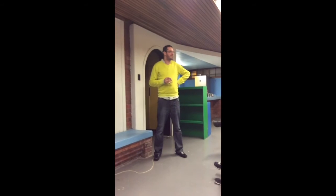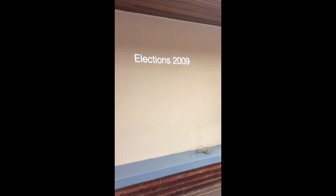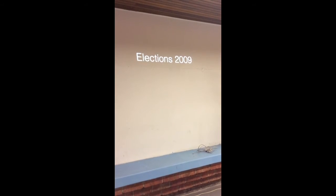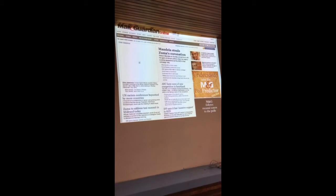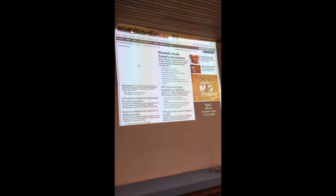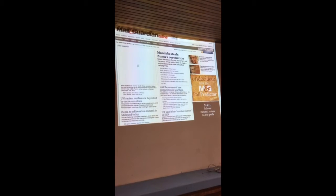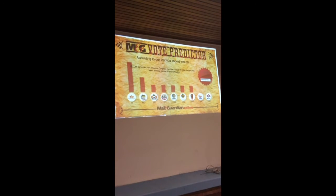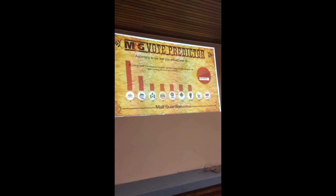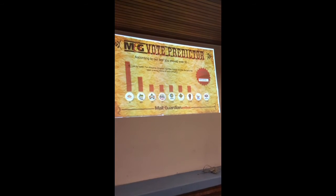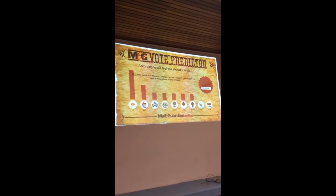Before elections in 2014, there were elections in 2009. I was working at the Mail and Guardian then as technology manager of M&G Online. This was our big play for 2009 — a vote predictor, like a shoot-it-out style where you'd answer a bunch of questions. We worked with political analysts to come up with questions that would match you to parties, and we used that to predict how our readers were going to vote — or would vote if they voted on issues rather than personalities and parties.